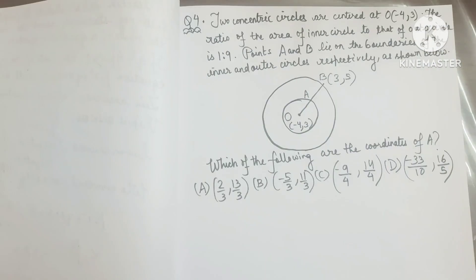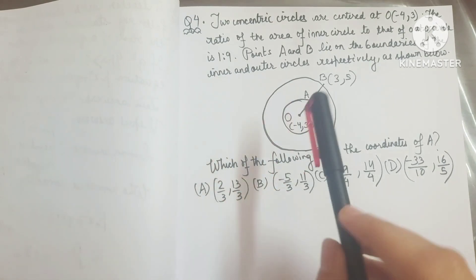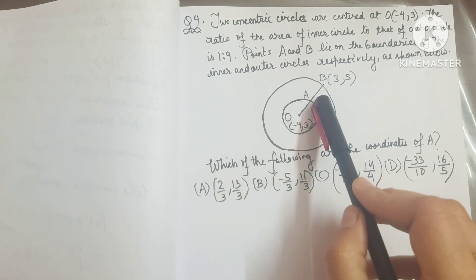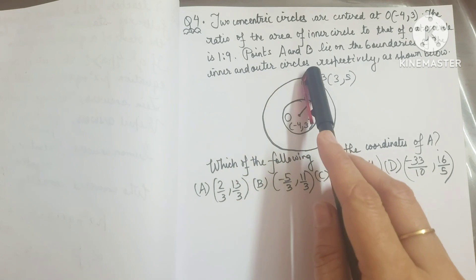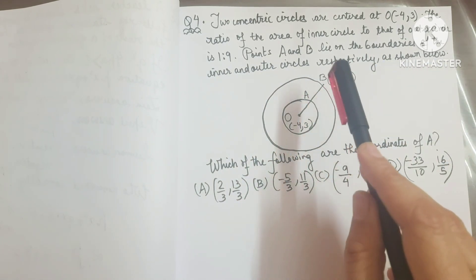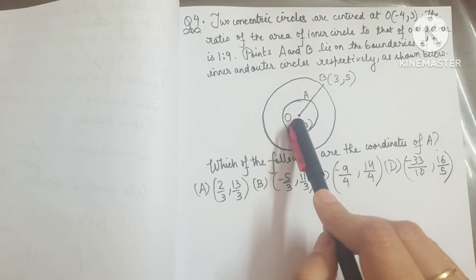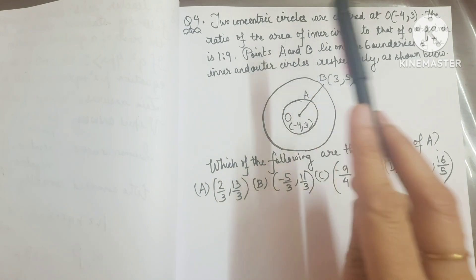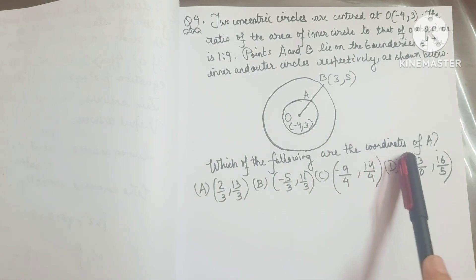Now let's start with question number 4. Two concentric circles are centered at O with coordinates minus 4 comma 3. The ratio of the area of the inner circle to that of the outer circle is 1 to 9. Points A and B lie on the boundaries of the inner and outer circles respectively. B's coordinates are 3 comma 5, O's coordinates are minus 4 comma 3, and the area ratio is 1 to 9.